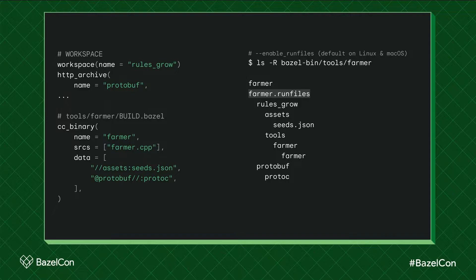If you are on Linux or Mac OS, then there is a flag called enable_run_files that will implicitly, even if you don't specify it, default to true. What that will do is give you, right next to your farmer binary, a farmer.runfiles directory that mimics the structure of all your repositories — your main one and the external ones — with all the assets in there, regardless of whether they are source or generated files, neatly arranged as symlinks, so you have well-known relative paths at which, for example, the farmer binary could access protoc.